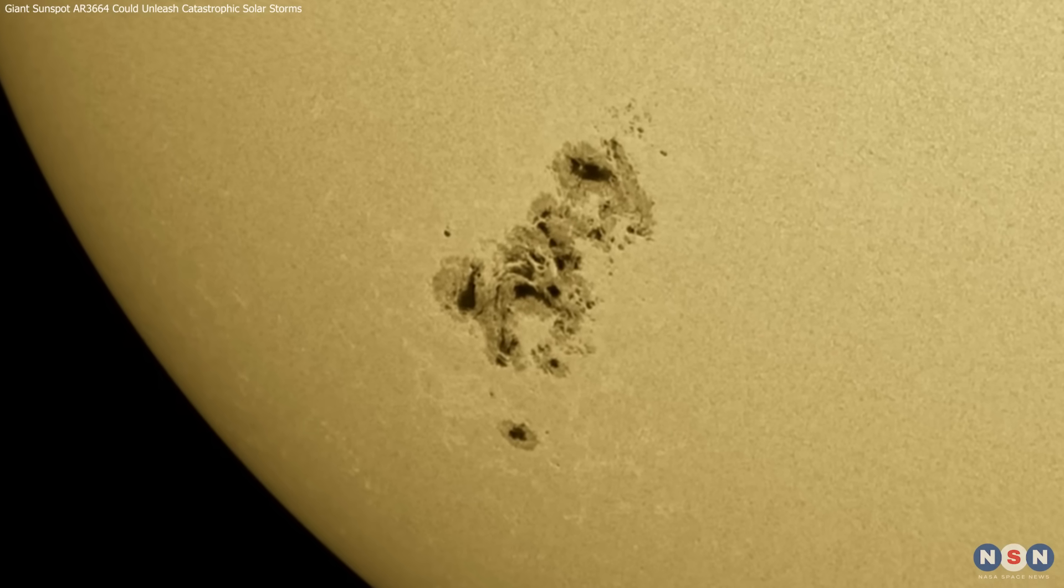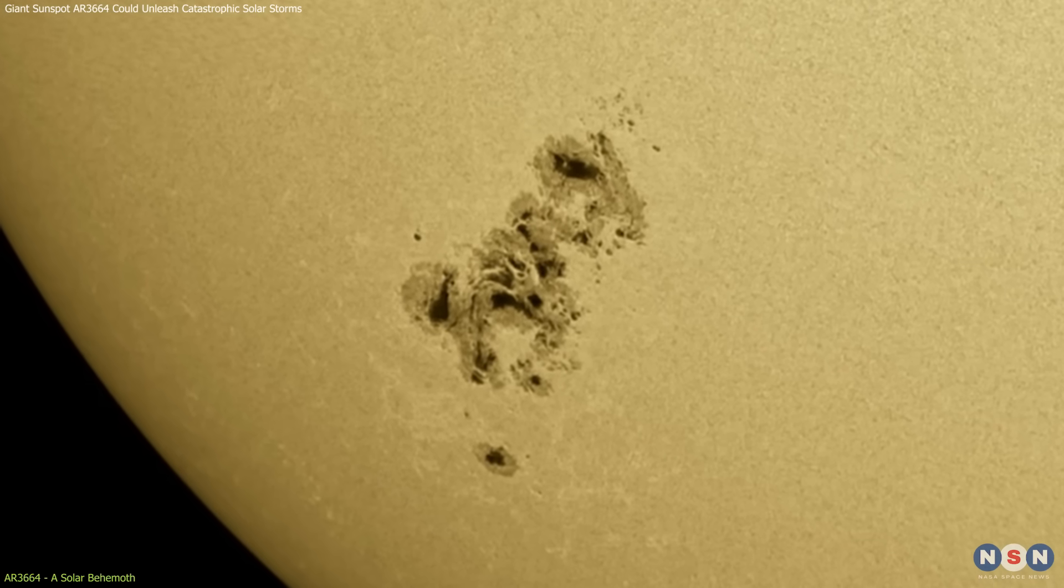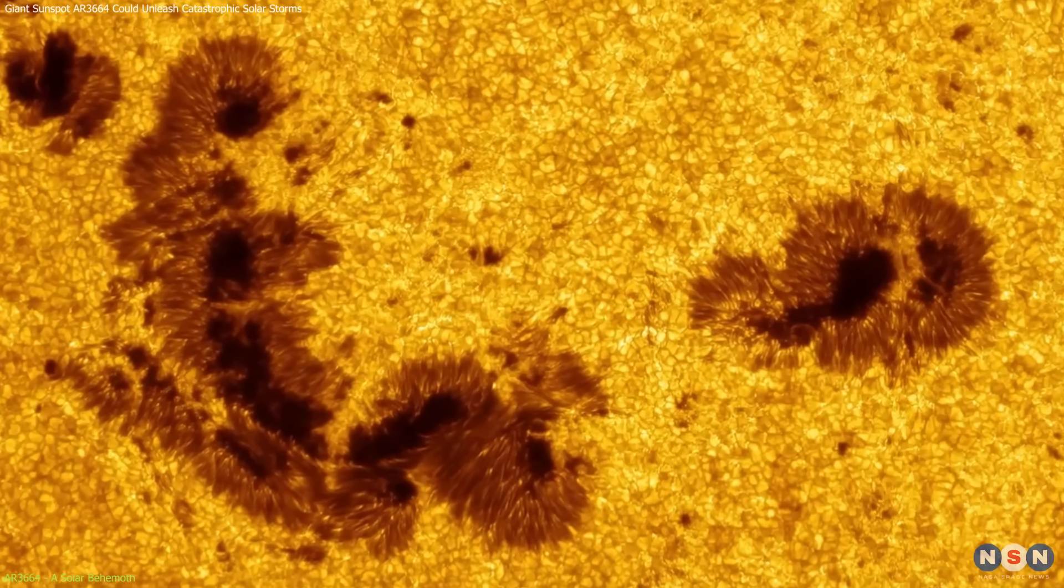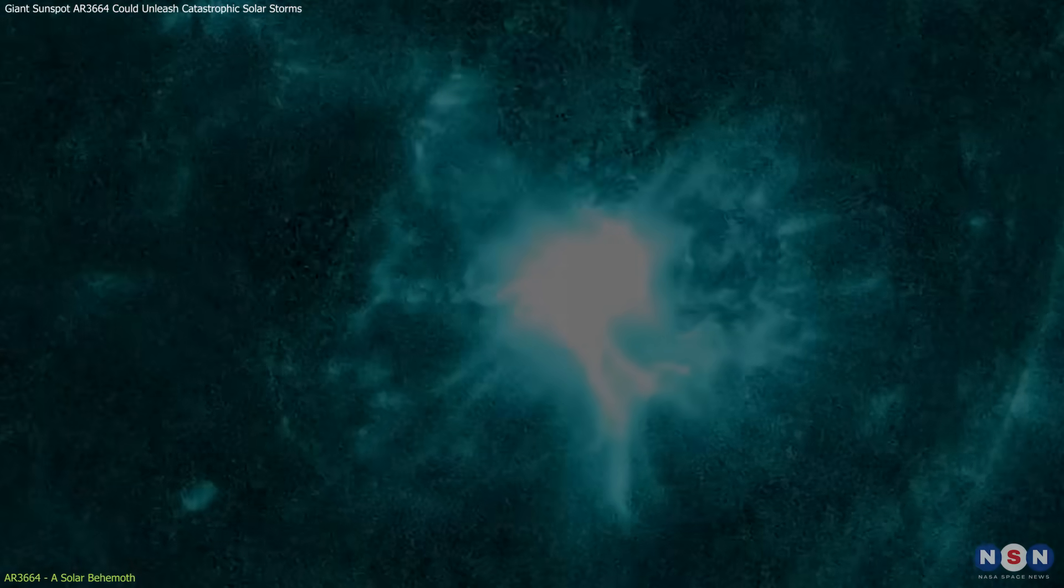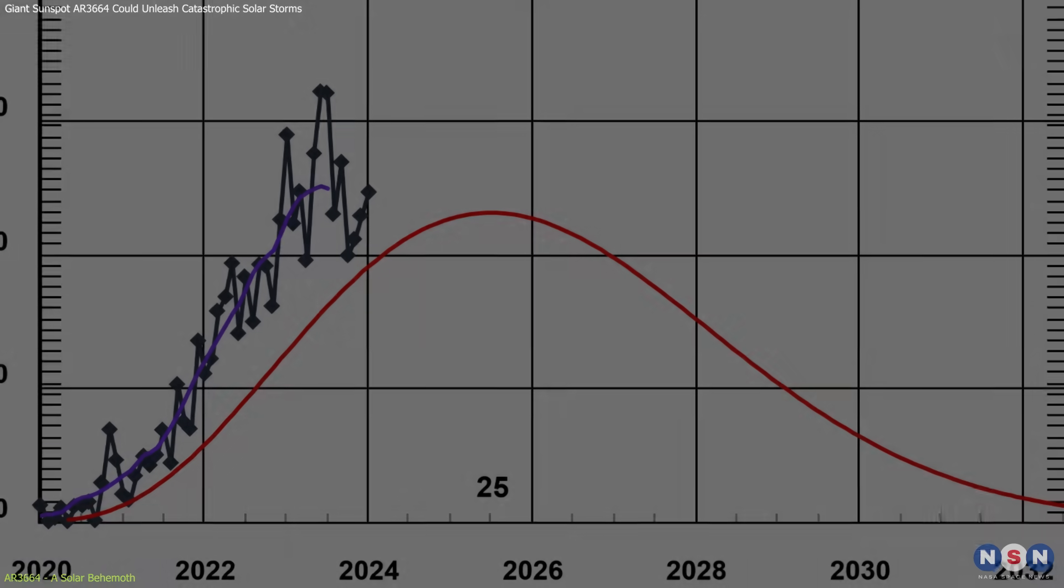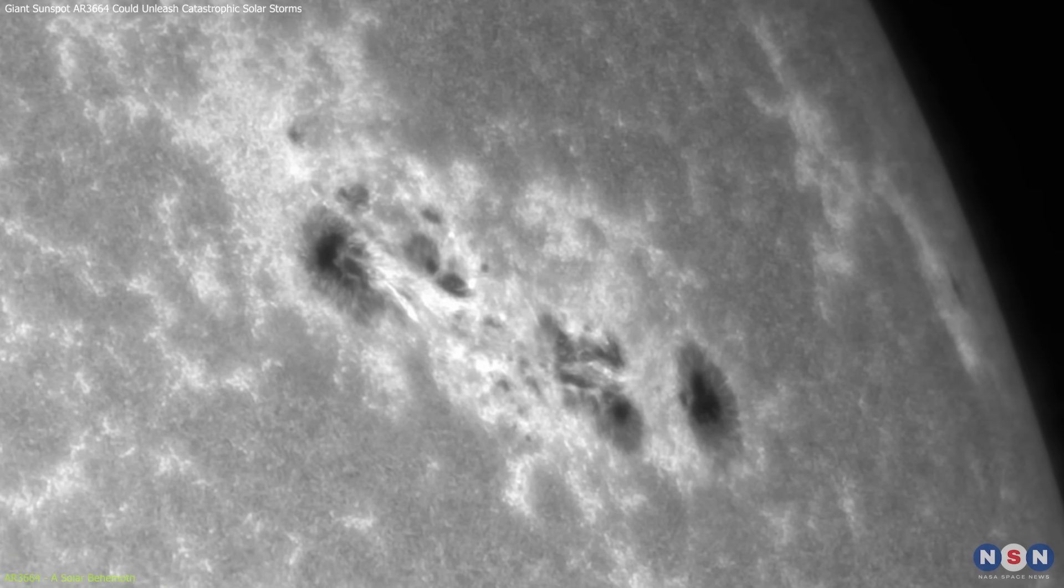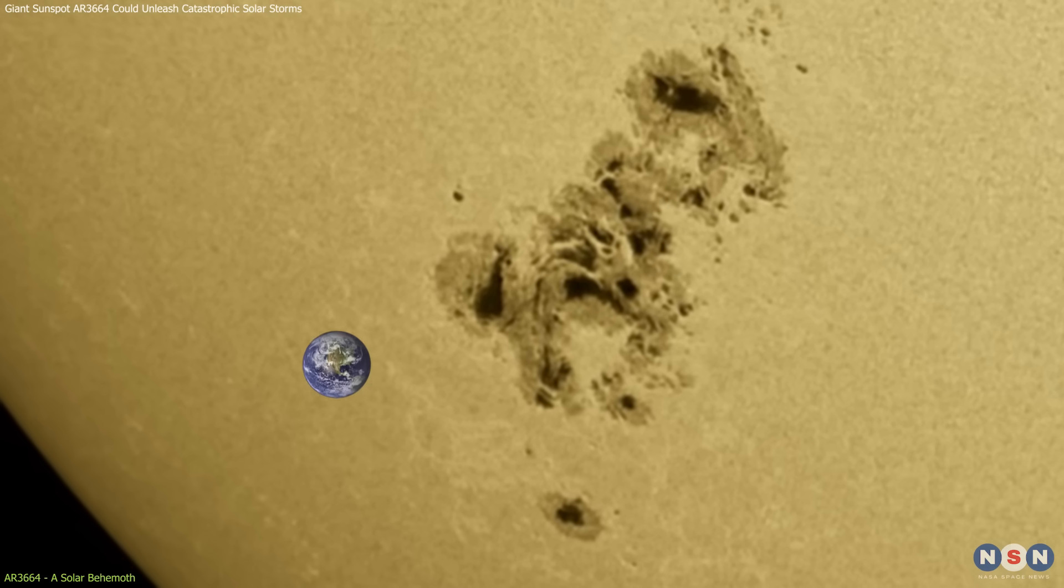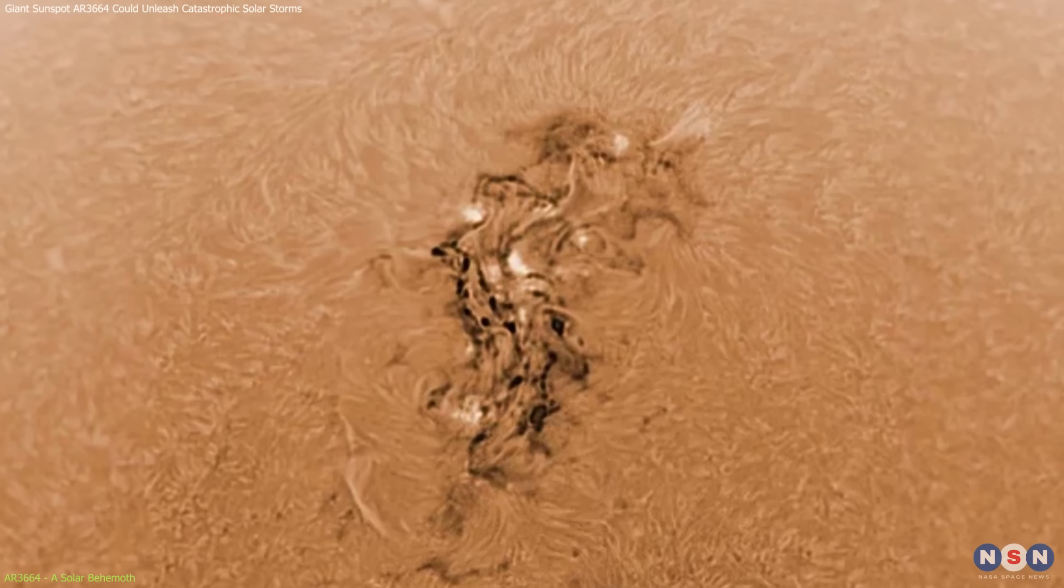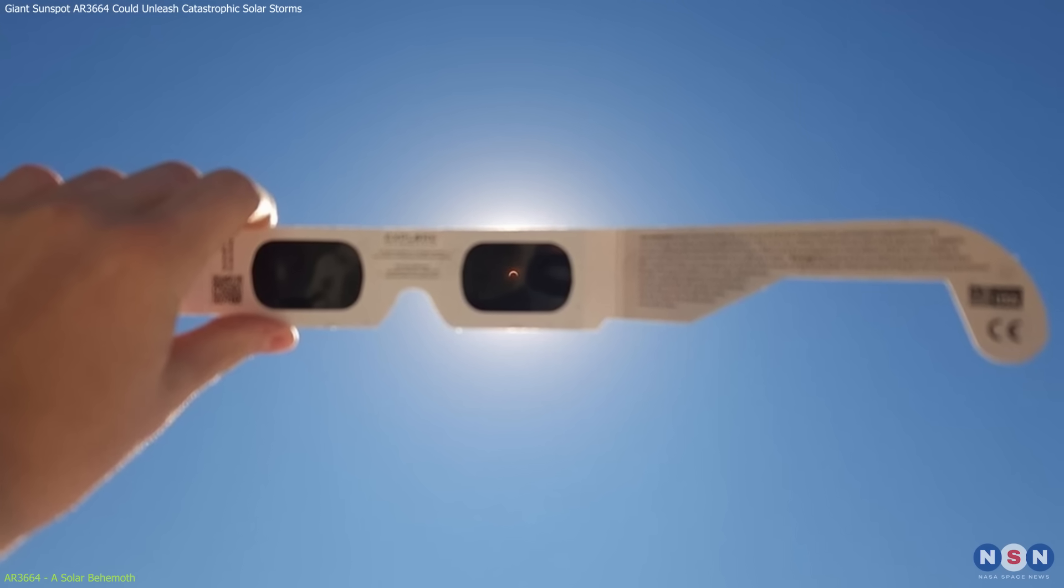Sunspot AR3664 is not just another spot on the sun, it's a giant, one of the largest and most active sunspots we've seen in the current solar cycle. Stretching almost 200,000 kilometers, this sunspot is more than 15 times wider than Earth.